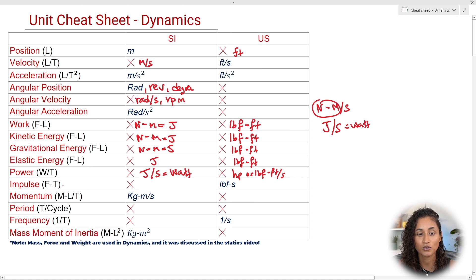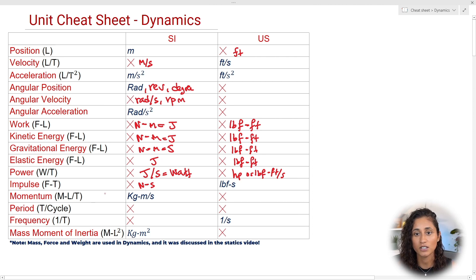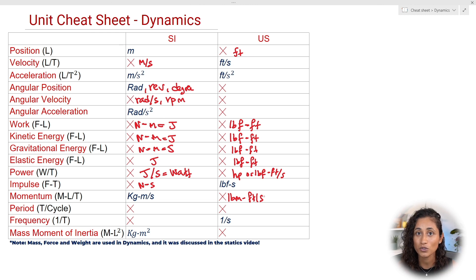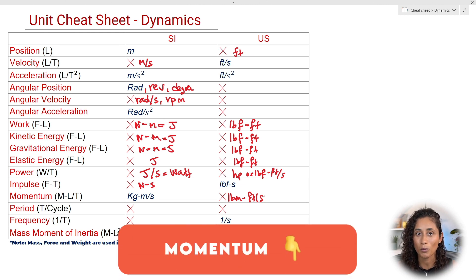Impulse is force times time: in SI that's Newton-seconds, and in US that's pound-force seconds. Momentum is mass times velocity: in SI that's kilograms × meters per second, and in US that's pound-mass × feet per second. When dealing with momentum problems, be careful — sometimes you're given weight and you need to convert to mass, which we covered in the statics cheat sheet. Comment 'momentum' below if you want to see a momentum example.